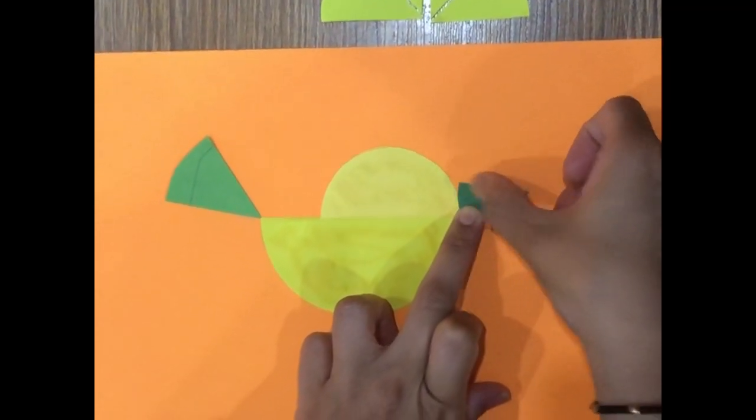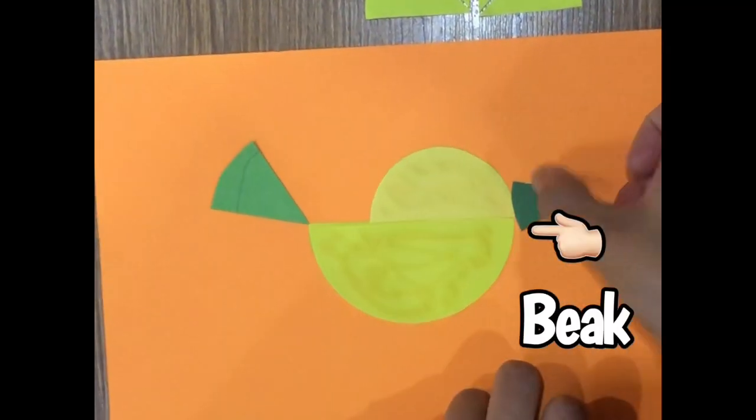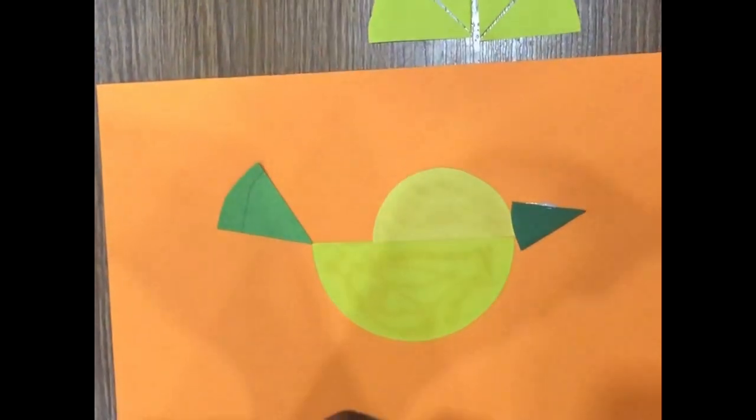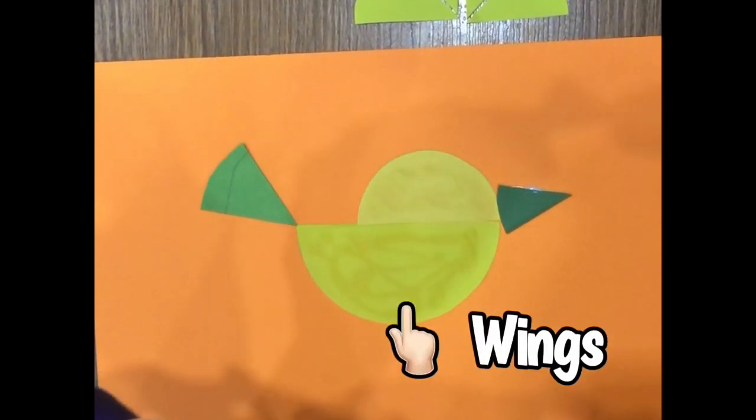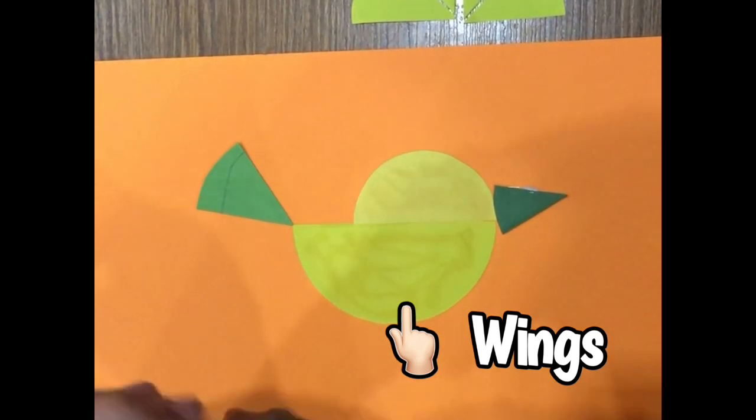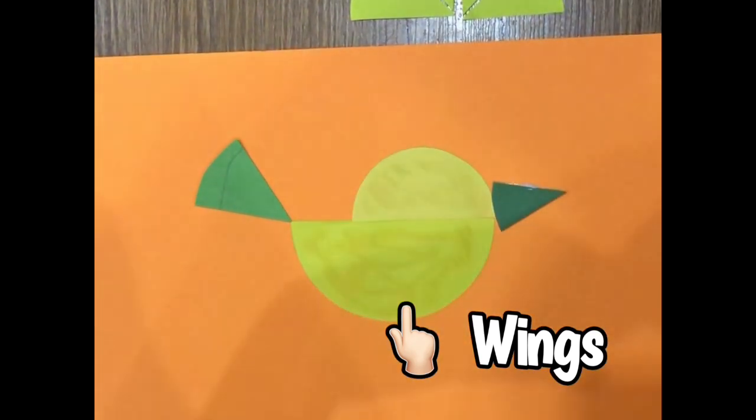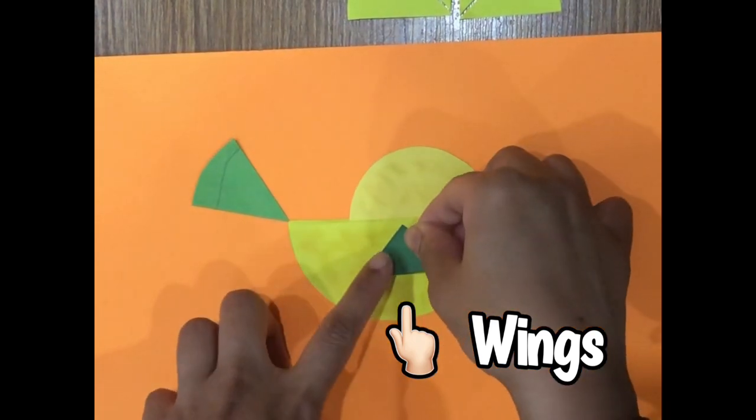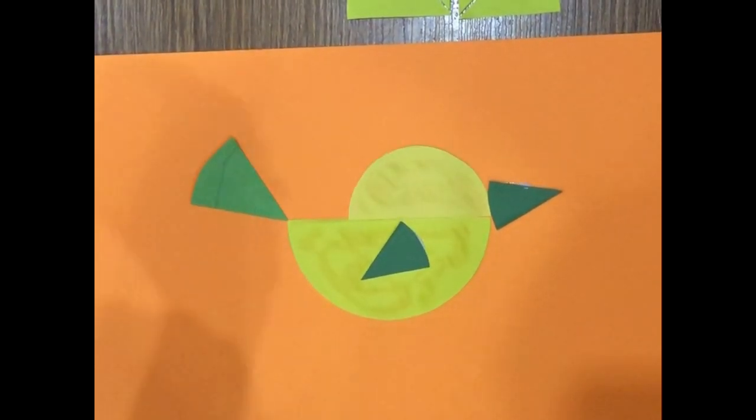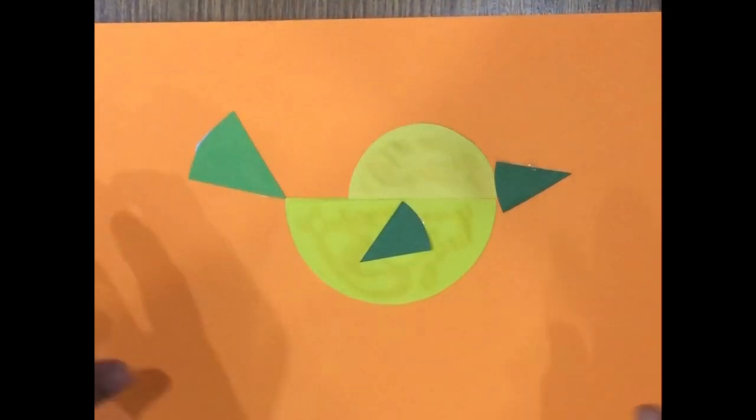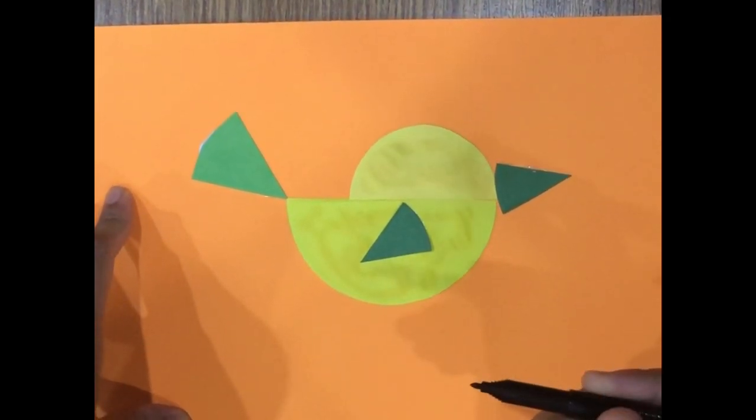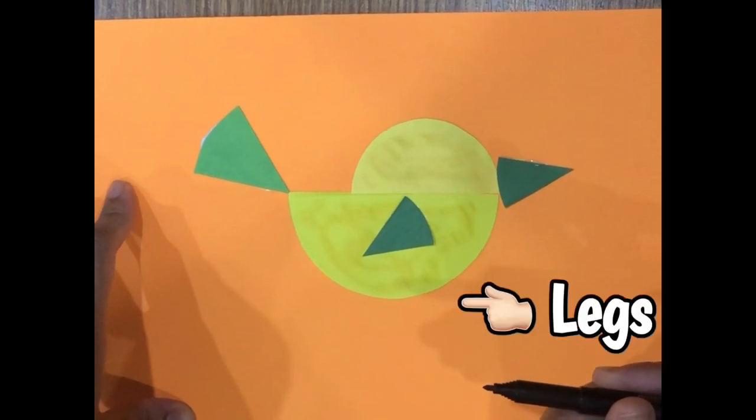Paste it to form the beak of the bird. Finally, we will paste the wings of the bird using another 1/8 cutout of the circle. Having pasted all the parts of the bird, we will use a black sketch pen to outline the legs and the eyes.